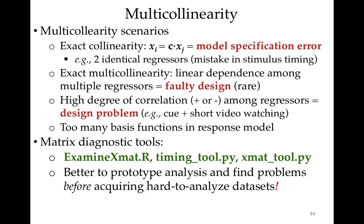Multicollinearity usually arises from errors in modeling. If you have two identical regressors, that's absolute perfect collinearity, and this is usually a mistake in stimulus timing. Our programs actually check for that, but if you have regressors that are very close to the same, it doesn't check for that. Exact multicollinearity is rare because it usually is a mistake, but you can have a high degree of correlation from a mistake that isn't so obvious. The usual cause is too many basis functions in the response model, but it can also be due to a poor experiment design.